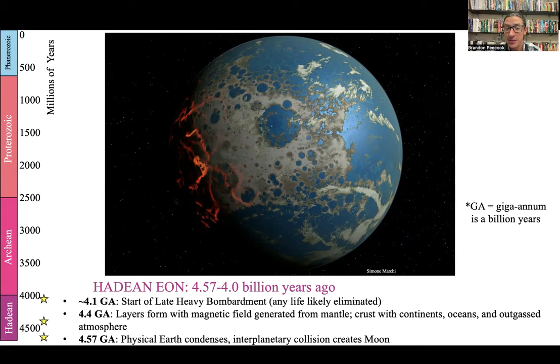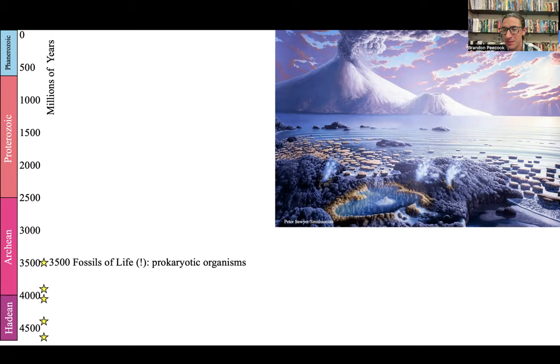In the next eon, which is a pretty long time — about one and a half billion years, or 1,500 million years — is a period called the Archean. You can see that on the timeline on the left-hand side.